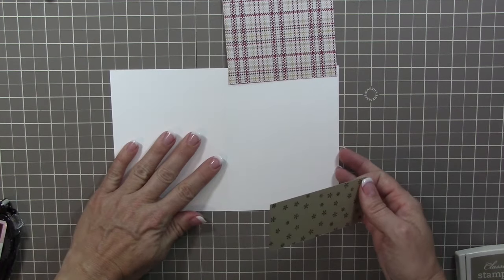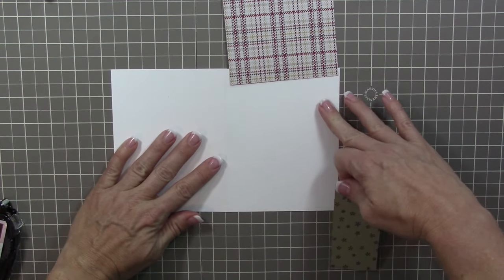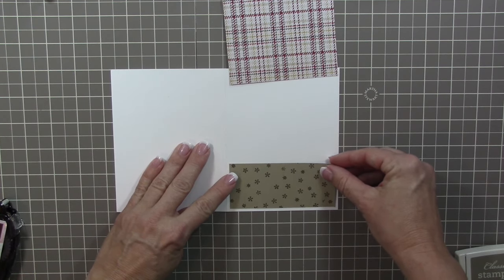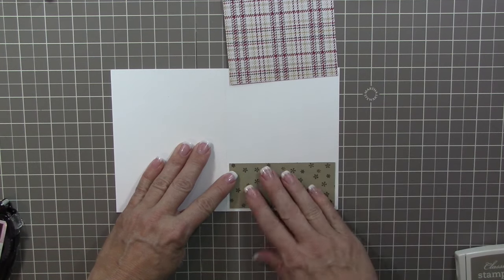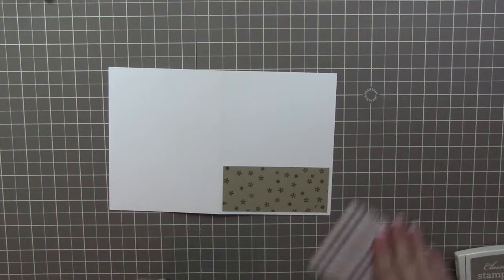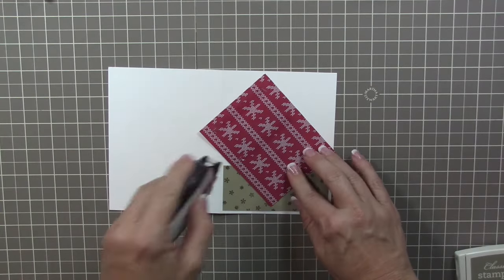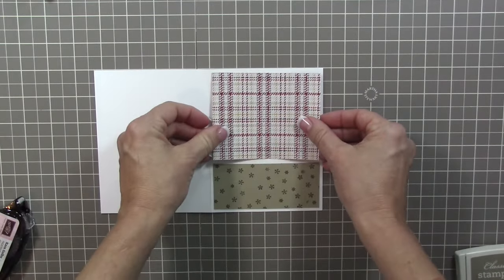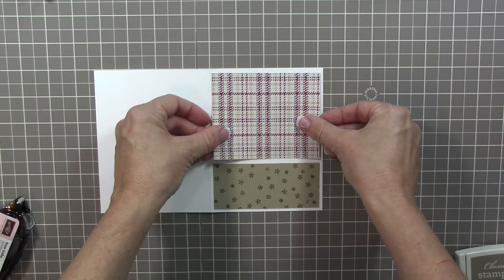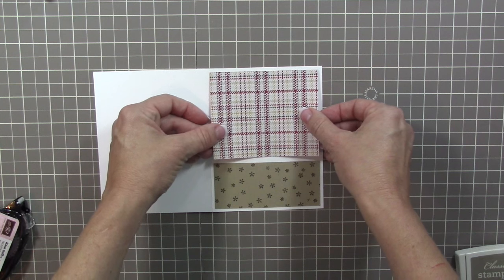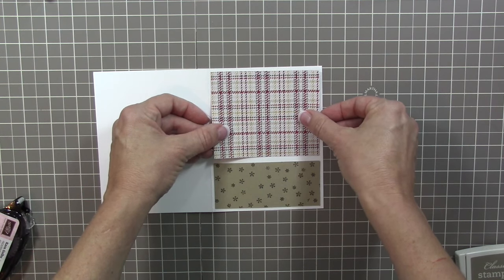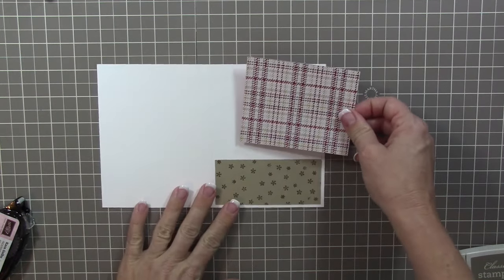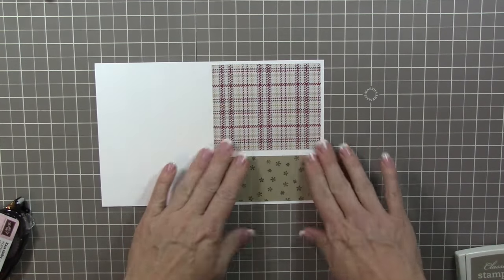I'm just using my snail. I'm going to adhere this to the card base, and you see me lining it up with the grid lines. This is just helping me make sure that I get that crumb cake piece of cardstock on there straight. Then I'm just going to do the same thing with the DSP, making sure that it's lining up with the crumb cake cardstock as well as matching the borders on the top and the two sides.